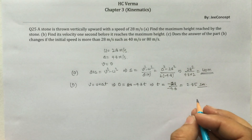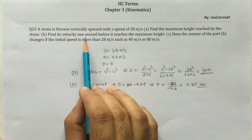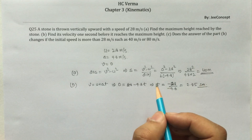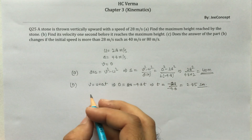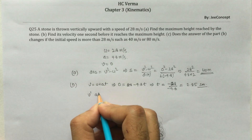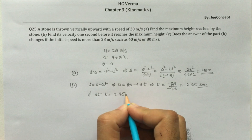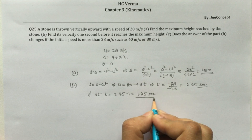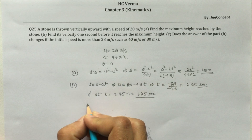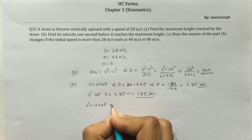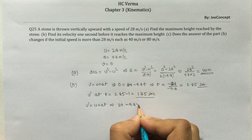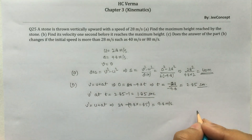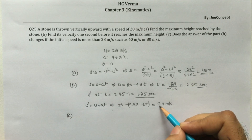We want the velocity one second before the stone reaches maximum height, which is at t = 2.85 minus 1 = 1.85 seconds. Using v' = u + at: initial velocity is 28 meter per second, plus minus 9.8 into 1.85. This gives v' = 9.8 meter per second.